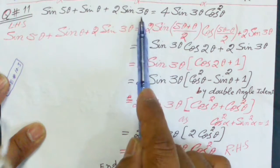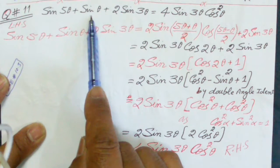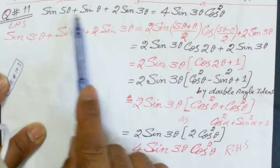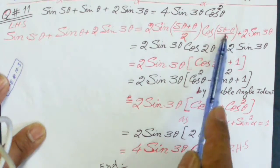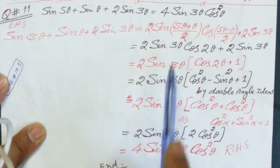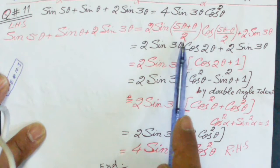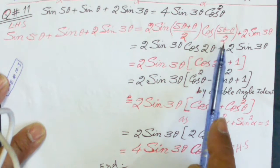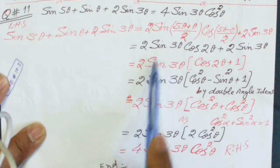Since sine 3 theta is in the target, we convert sine 5 theta plus sine theta into a product. Applying the sum-to-product formula to these two terms, we get 2 sine of (5 theta plus theta) divided by 2, multiplied by cosine of (5 theta minus theta) divided by 2, plus 2 sine 3 theta. After simplification, we get 2 sine 3 theta multiplied by cosine 2 theta, plus 2 sine 3 theta.